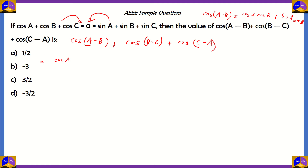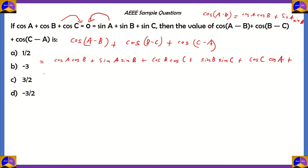Applying the expansion to all three terms, what we get is: cosA cosB plus sinA sinB plus cosB cosC plus sinB sinC plus cosC cosA plus sinC sinA. This is what the expression is now expanded into.